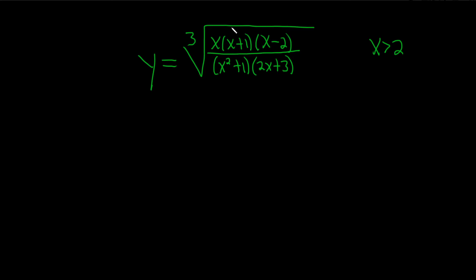So the process of logarithmic differentiation works as follows. The first step is we take the natural log on both sides. So ln of y equals ln of all of this. Whenever you have a cube root, you can just take all of this and write it to the 1 third power.